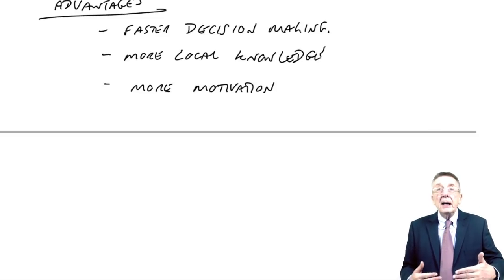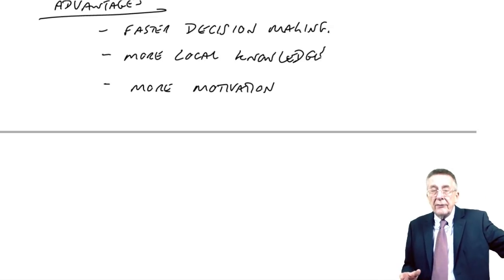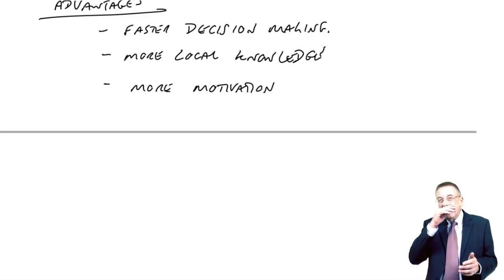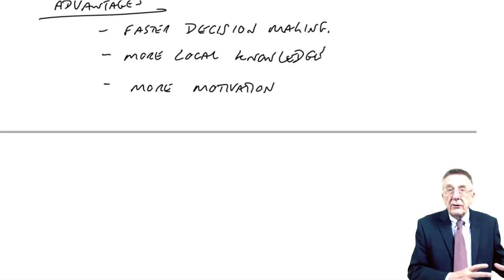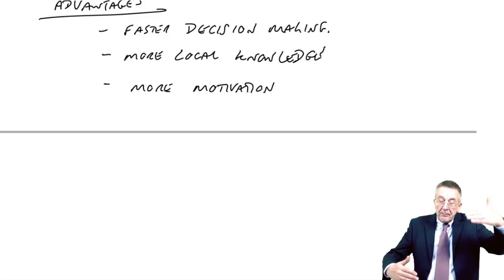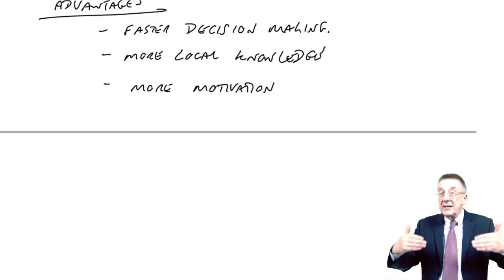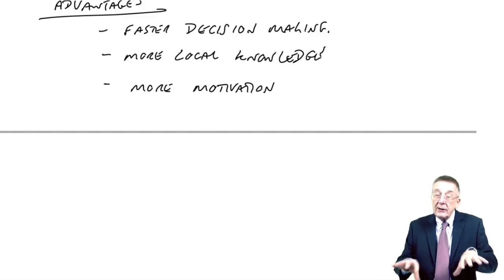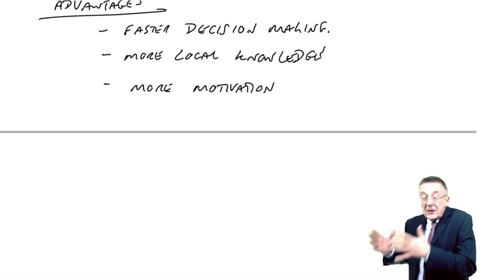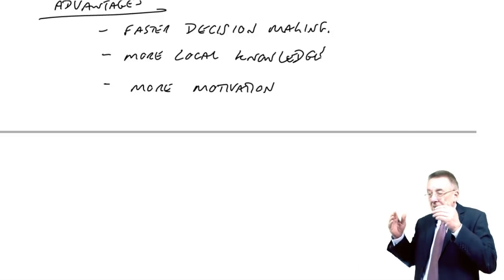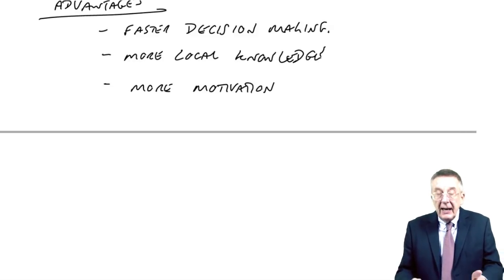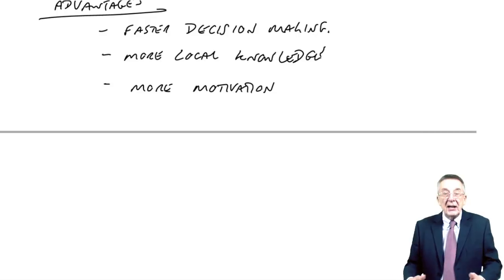A division doesn't have to be geographical. Within the same building, for example, we could be a firm of accountants where part of the business does audits and another part does tax. If both parts have managers able to make their own decisions — autonomy — then they're divisions. The person in charge of the tax division knows much more about tax and what they need to offer customers than I do, so you still get faster decision-making and knowledge of the particular area.